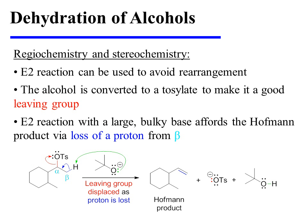Regiochemistry and stereochemistry are additional facets of these reactions which may sometimes be of interest. With the preceding substrate, an E2 reaction can be used to avoid carbocation rearrangement if the alcohol is first converted to a tosylate, making it a different sort of good leaving group. E2 reaction with a large bulky base, such as tertiary butoxide, will afford the Hofmann product, because the bulky base will remove a proton from the less substituted, more sterically accessible beta position, affording the less highly substituted alkene.